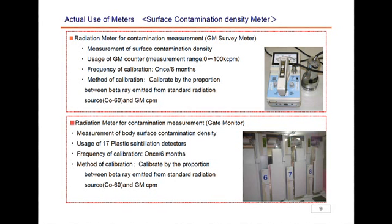Below that, you can see a gait monitor. This is made for preventing the radioactive materials on the surface of the worker's body from moving outside the controlled area with the workers. In order to measure the contamination density of the body's surface, we put approximately 17 plastic scintillation detectors from head to toe directing them towards the body. We measure the radiation on the surface of the bodies, and if the results of the measurement are below the screening level, you are allowed to go outside the controlled area. This gait monitor is properly calibrated once every six months.